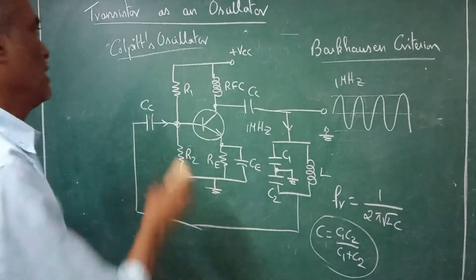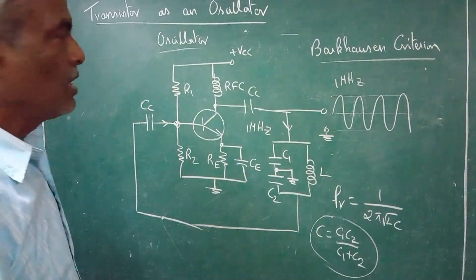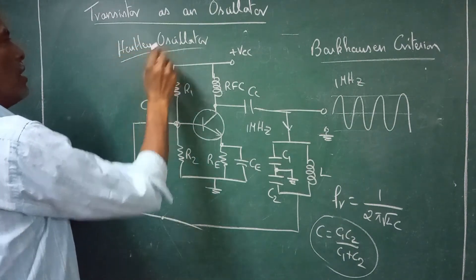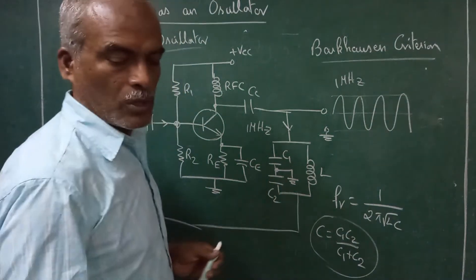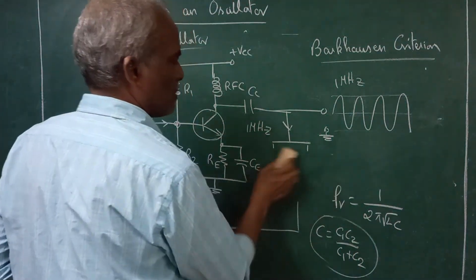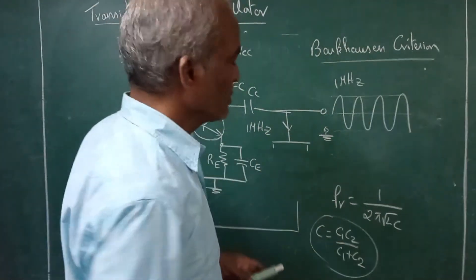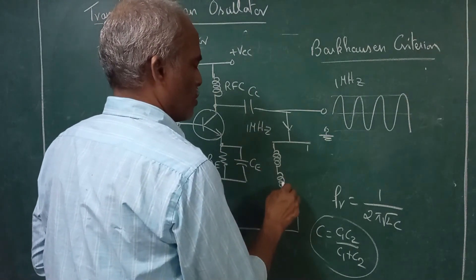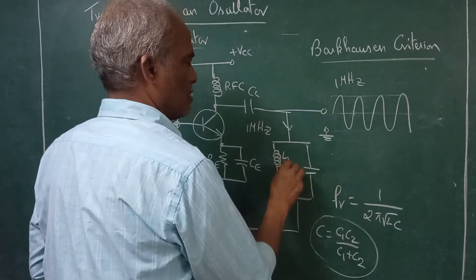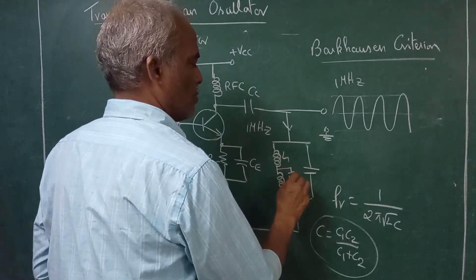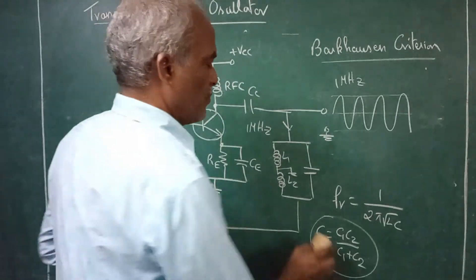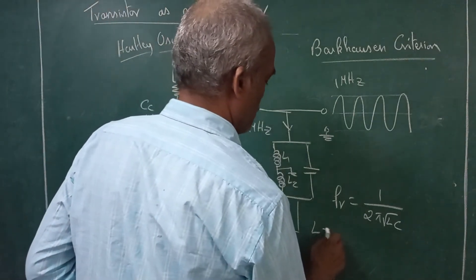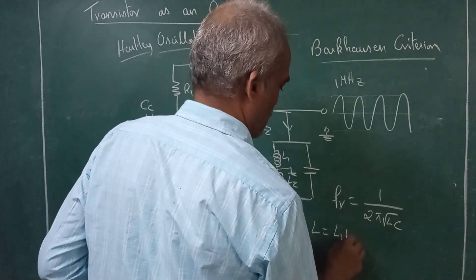Now we want a Hartley oscillator. In the Hartley oscillator, only the tank circuit is changed. The tank circuit has two coils and one capacitor — this is L1, L2, and this is grounded. The same resonant frequency formula applies, but L = L1 + L2.